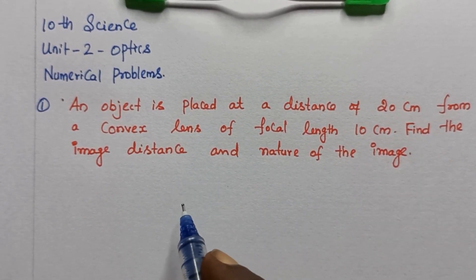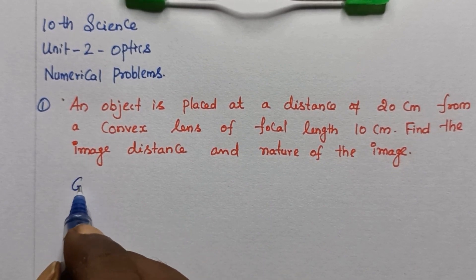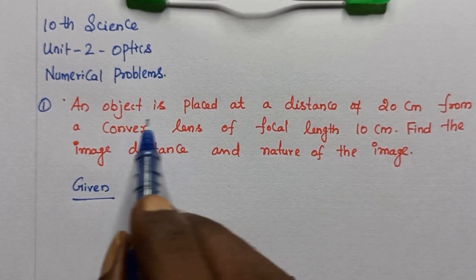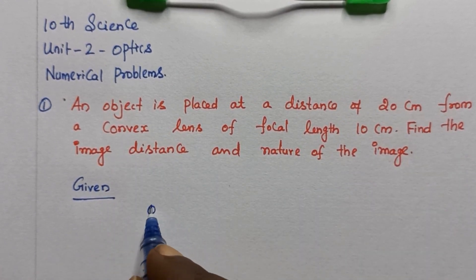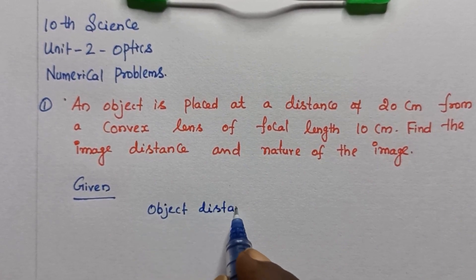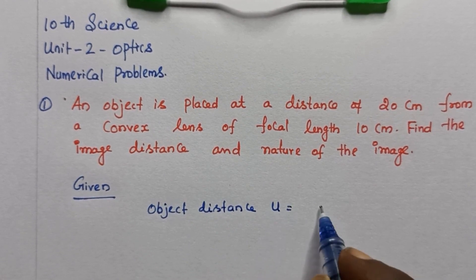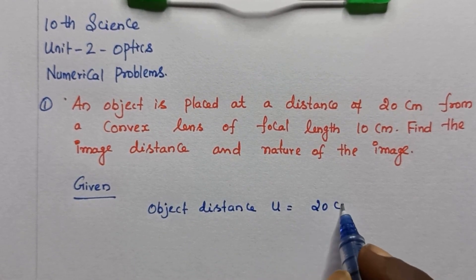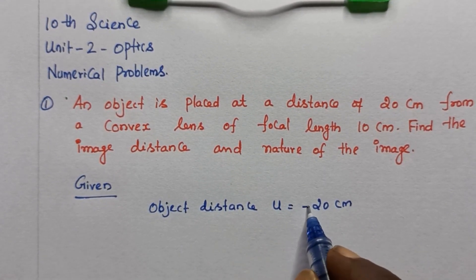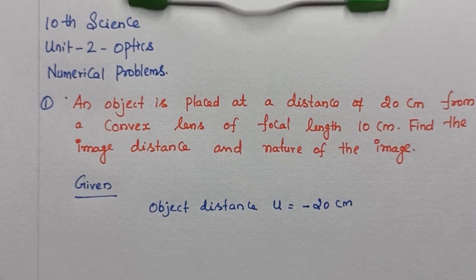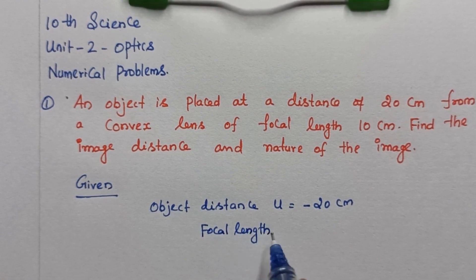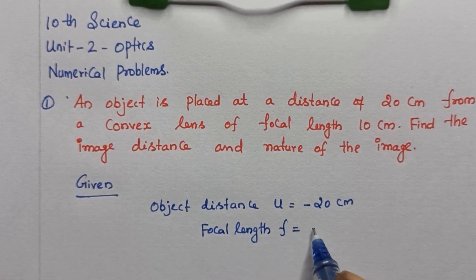First, what is the data? Given data: object distance u is equal to 20 centimeters. Since the object is on the left-hand side, this is minus 20 centimeters. Focal length of the convex lens: f is equal to 10 centimeters.